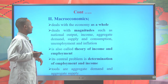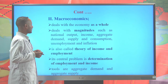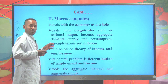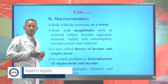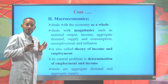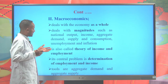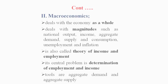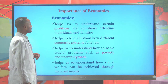The second division of economics is macroeconomics, which deals with the economy as a whole. It deals with magnitudes such as aggregate demand, aggregate supply, the general level of prices, aggregate consumption, and the level of savings in an economy. Macroeconomics is also called the theory of employment and income, and its major tools are aggregate demand and aggregate supply.